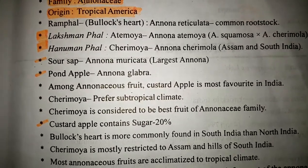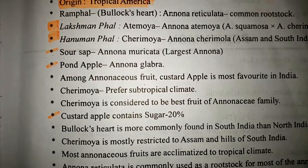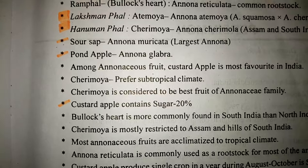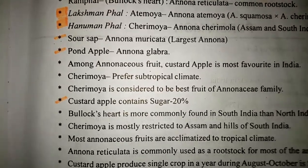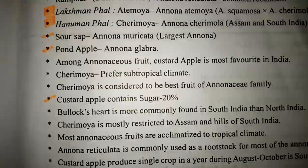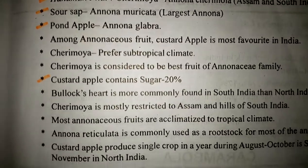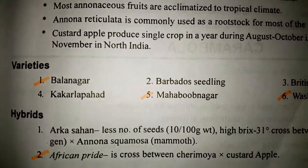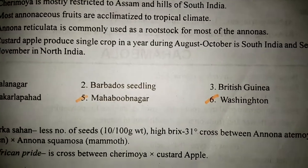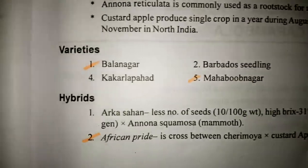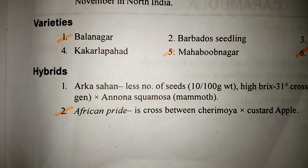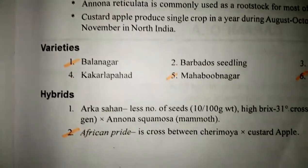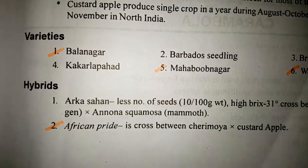Lakshan Pal, which is also known as Atemoya, has the botanical name Annona atemoya, a cross of Annona squamosa into Annona cherimola. Soursop is also known as Annona muricata, which is the largest Annona. Pond Apple is Annona glabra. Custard Apple contains 20% sugar.